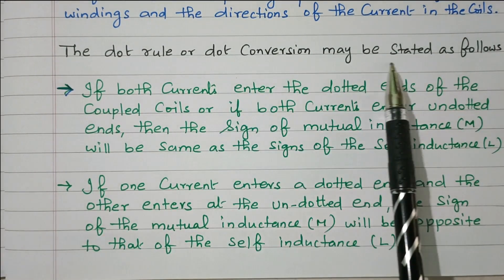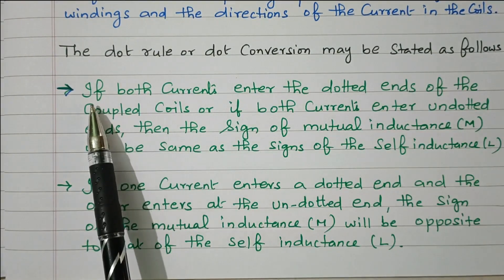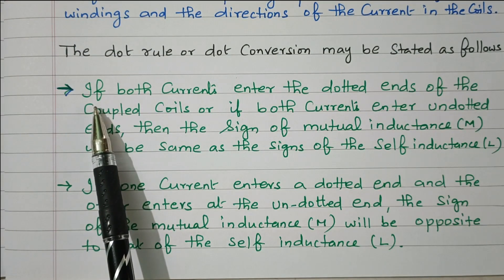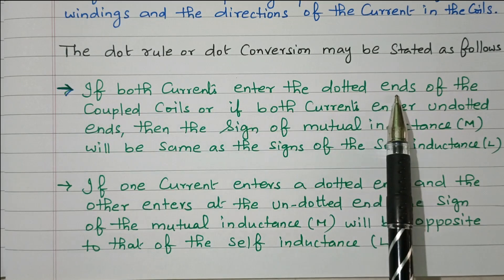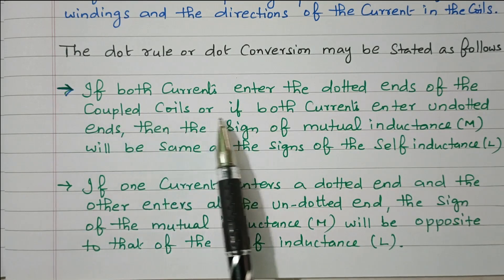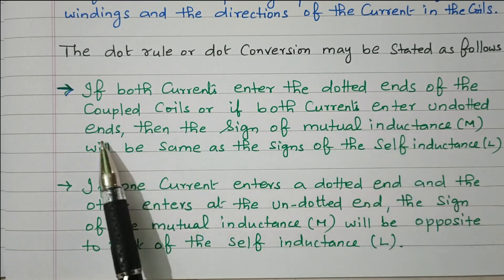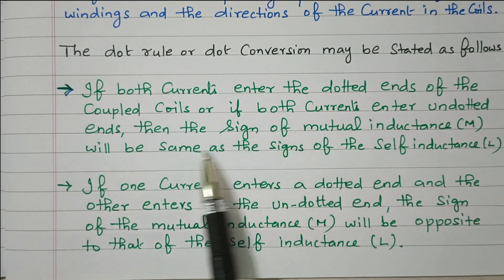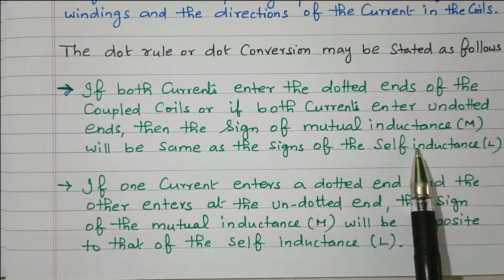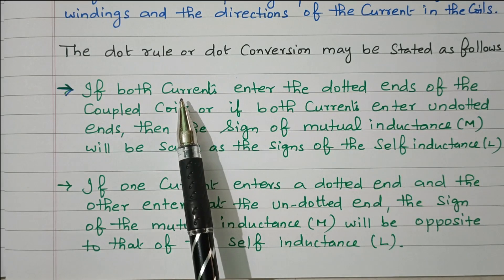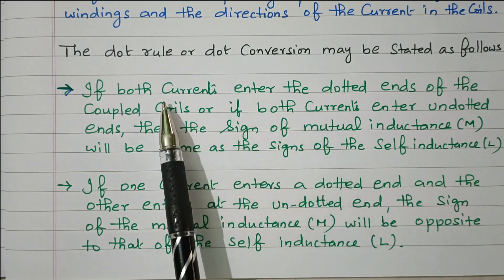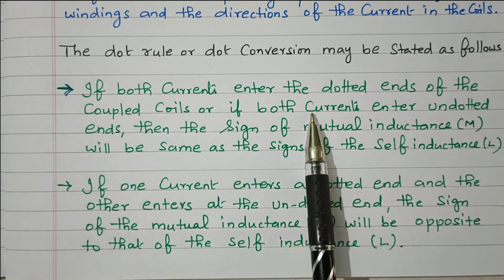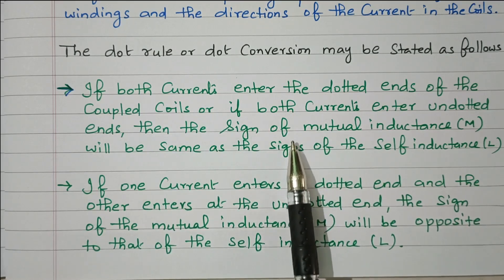The dot rule or dot conversion may be stated as follows. First: if both currents enter the dotted end of the coupled coil, or if both currents enter the undotted end, then the sign of mutual inductance will be the same as the sign of self inductance. Both currents must enter the same type of terminal — both dotted or both undotted — for mutual and self inductance to have the same sign.